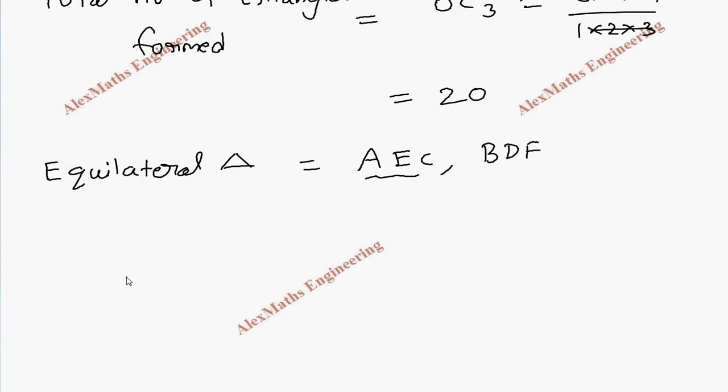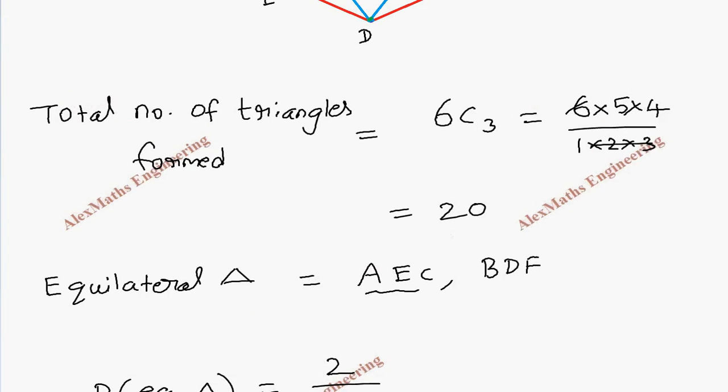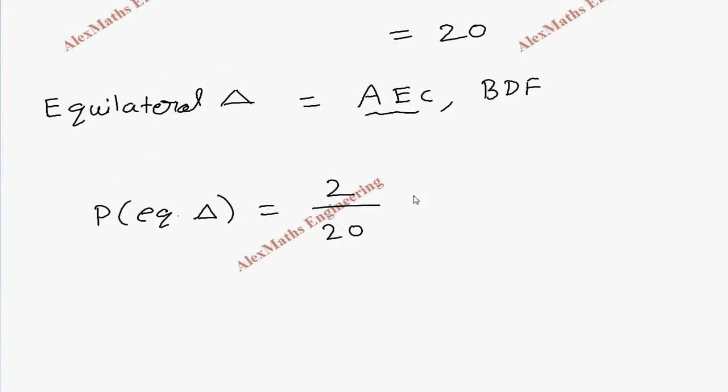So now, the probability of equilateral triangle is 2 triangles out of the number of triangles totally formed, which is 20. After reducing, this is 1 by 10.